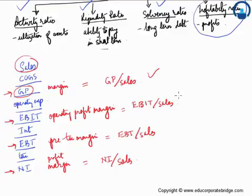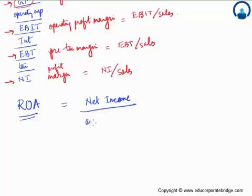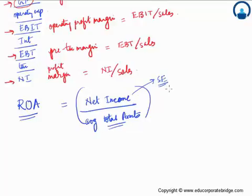We have already discussed this in vertical analysis. There are other sets of ratios which also become equally important. Something called return on assets — ROA — is crudely defined as net income divided by average total assets. We are essentially trying to find out what is the return on total assets. However, when we look at this formula: net income is the return to the shareholders' equity. Total average assets are contributed by both debt holders and equity holders.